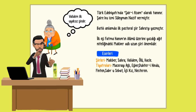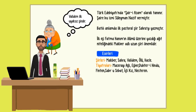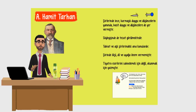Abdülhak Hamit Tarhan'ın eserleri — Şiirleri: Makber, Sahra, Validem, Ölü, Hacle. Tiyatroları: Macera-yı Aşk, Eşber, Duhter-i Hindu, Finten, Sabr-ü Sebat, İşkilli Nigar, Nesteren.